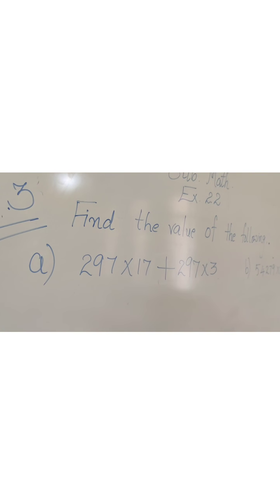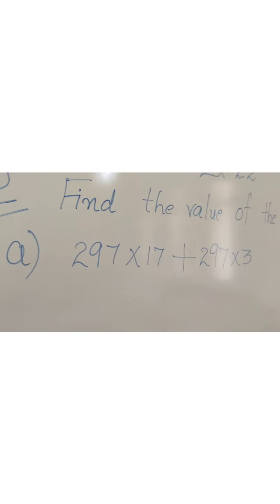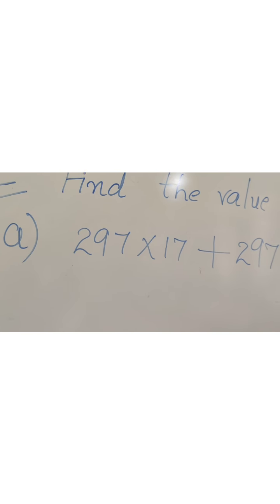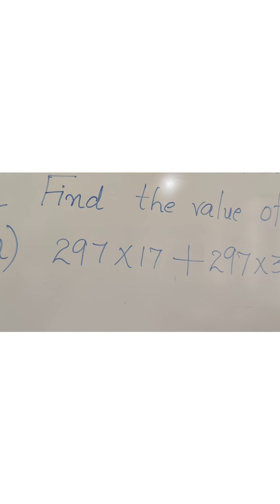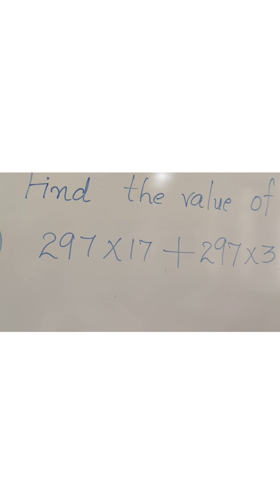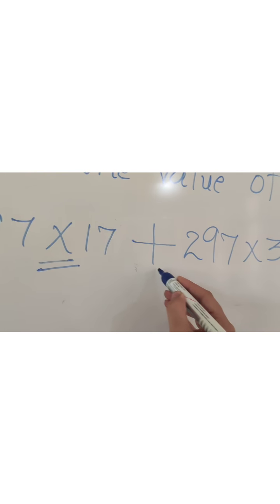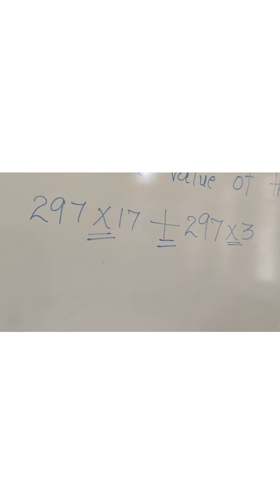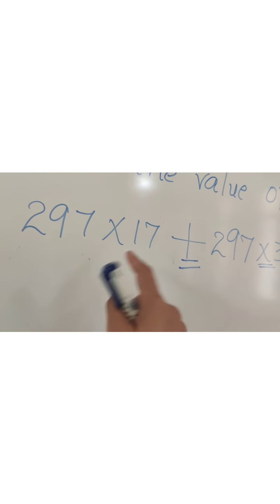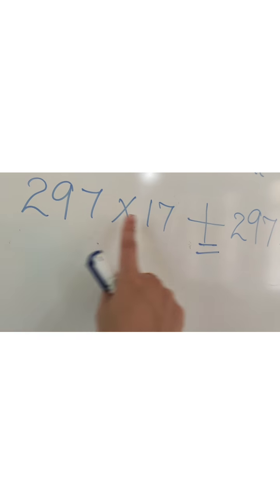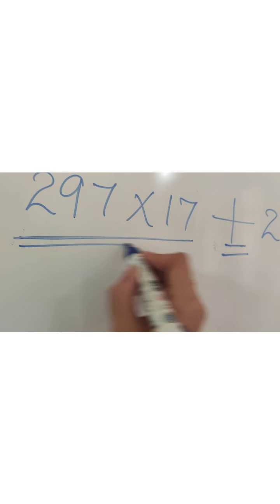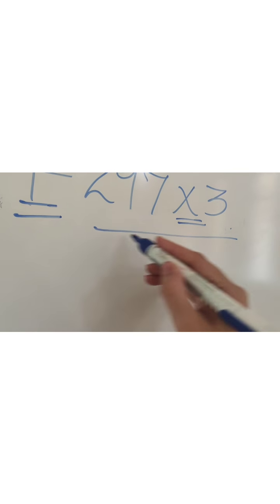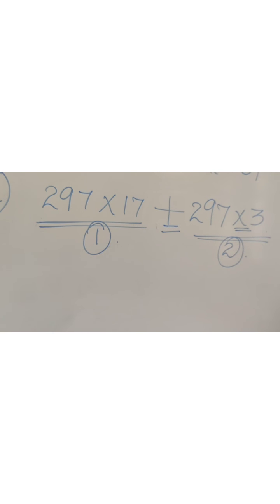Let's move to question 3: Find the value of the following. Here they have given a question with both multiplication and addition signs. How do we solve such a sum? The first step is to make a group. We group 297×17 as the first group, then there is addition, and then 297×3 as the second group.